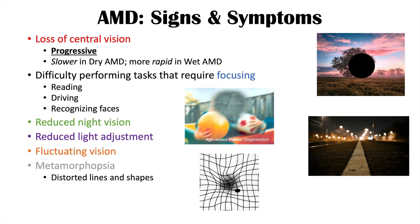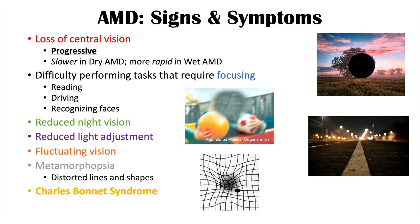A hallmark finding in AMD is metamorphopsia — distorted lines and shapes. When looking at an Amsler grid, which has lines forming boxes at 90-degree angles, the boxes and lines appear distorted due to macular degeneration. Another associated condition is Charles Bonnet syndrome, where loss of input from the macula causes the brain to produce visual hallucinations. Roughly 10% of patients with macular degeneration experience Charles Bonnet syndrome.